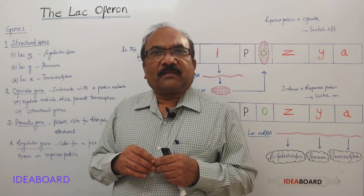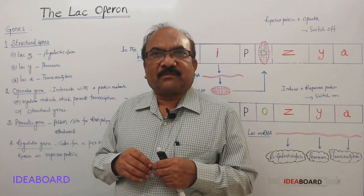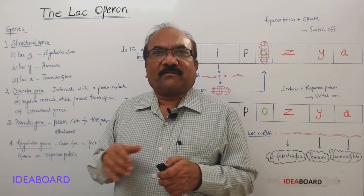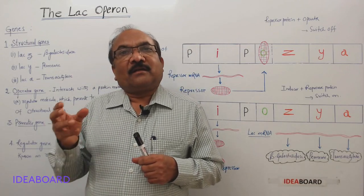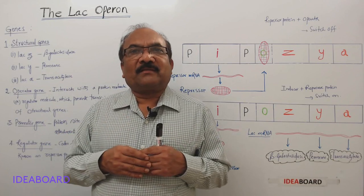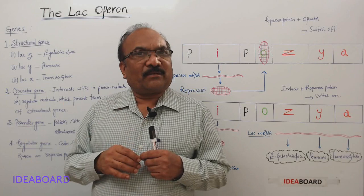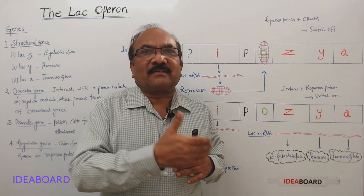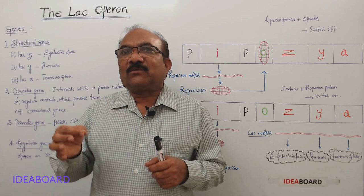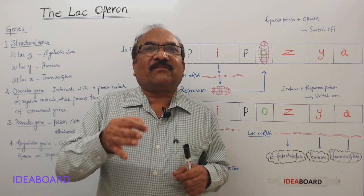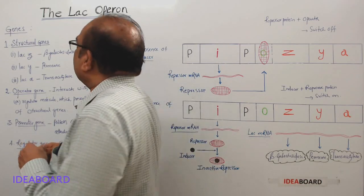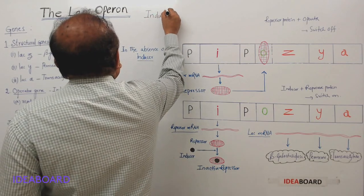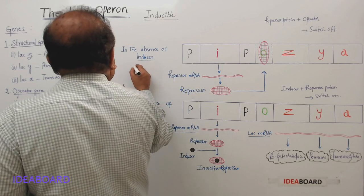Lactose is a disaccharide and these three enzymes break it down into galactose and glucose. Beta-galactosidase splits lactose, permease increases membrane permeability to receive lactose, and transacetylase adds an acetyl group. E. coli requires these enzymes only when lactose is available, and since lactose stimulates production of the enzymes needed for its breakdown, this system is called an inducible system. The inducer is lactose itself.